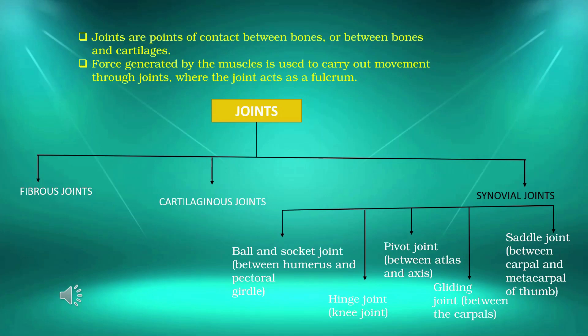The synovial joints are further classified into: 1. Ball and socket joint, between humerus and pectoral girdle. 2. Hinge joint, knee joint. 3. Pivot joint, between atlas and axis. 4. Gliding joint, between the carpals. 5. Saddle joint, between carpal and metacarpal of thumb.